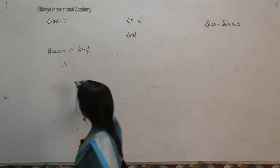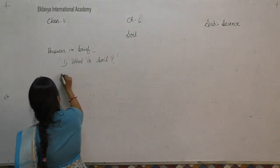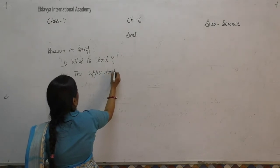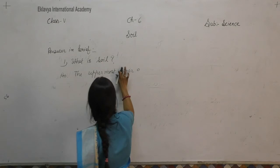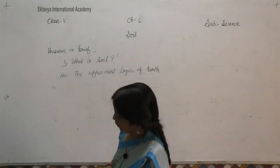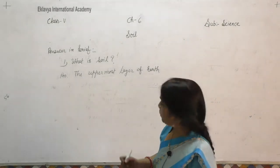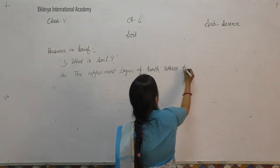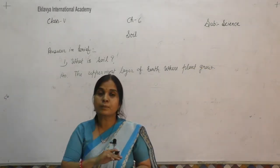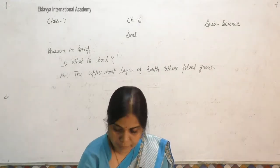Answer in brief. First question: what is soil? The uppermost layer of earth where plants grow is called soil.